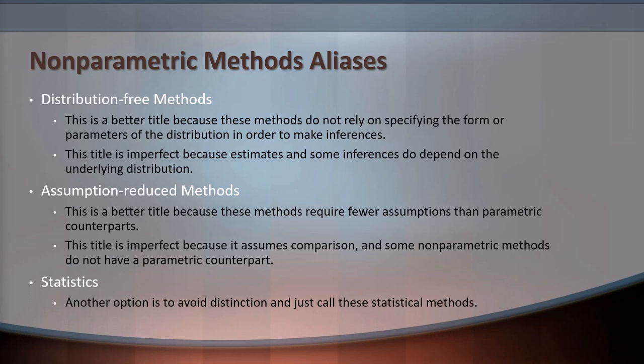Another option some statisticians recommend is to just avoid the distinction and simply call these statistical methods. I believe these particular methods have certain properties that distinguish them from what we usually learn, so a distinction is probably still to our benefit — and perhaps "assumption-reduced methods" is the best term. But for simplicity and because of tradition, I will continue to refer to our methods as non-parametric statistics.